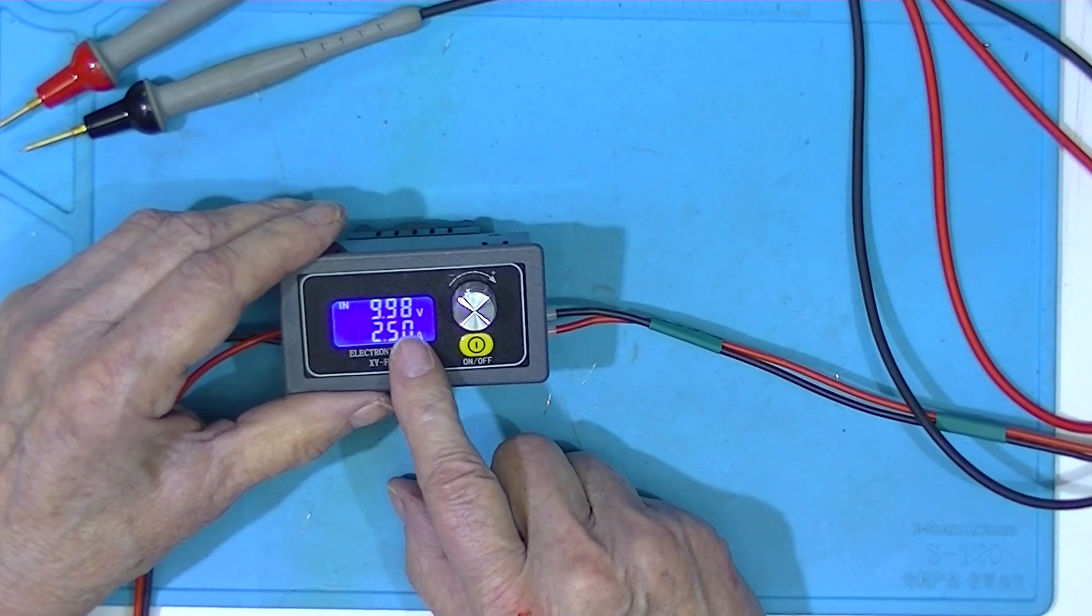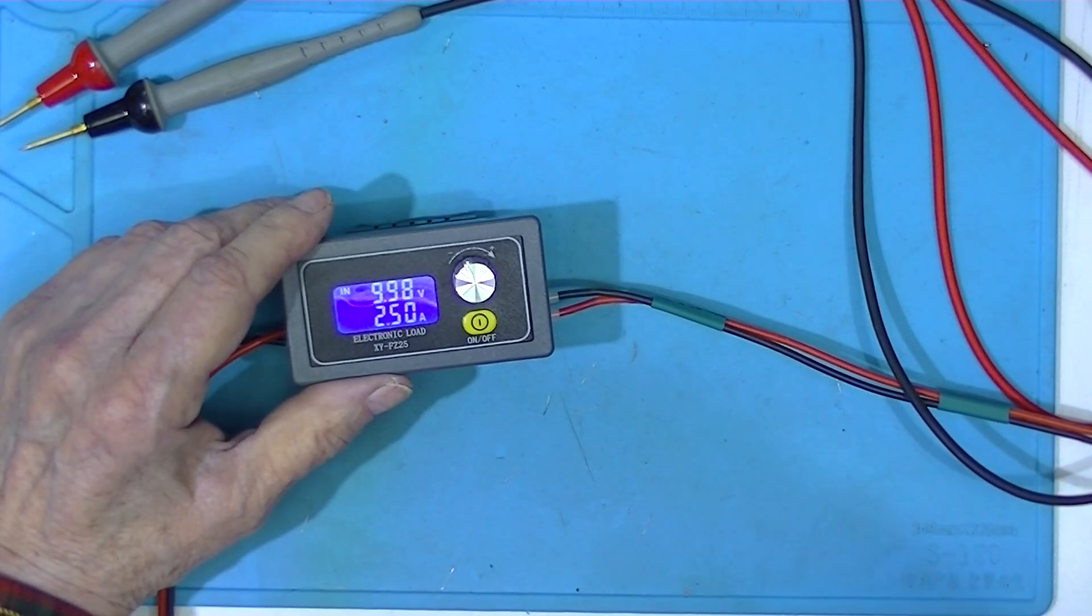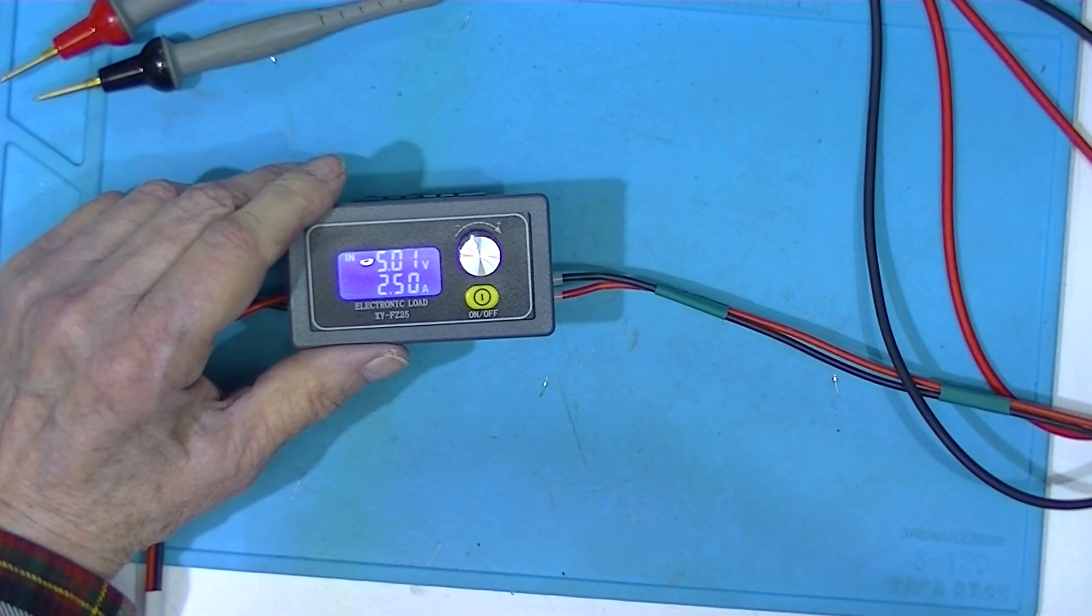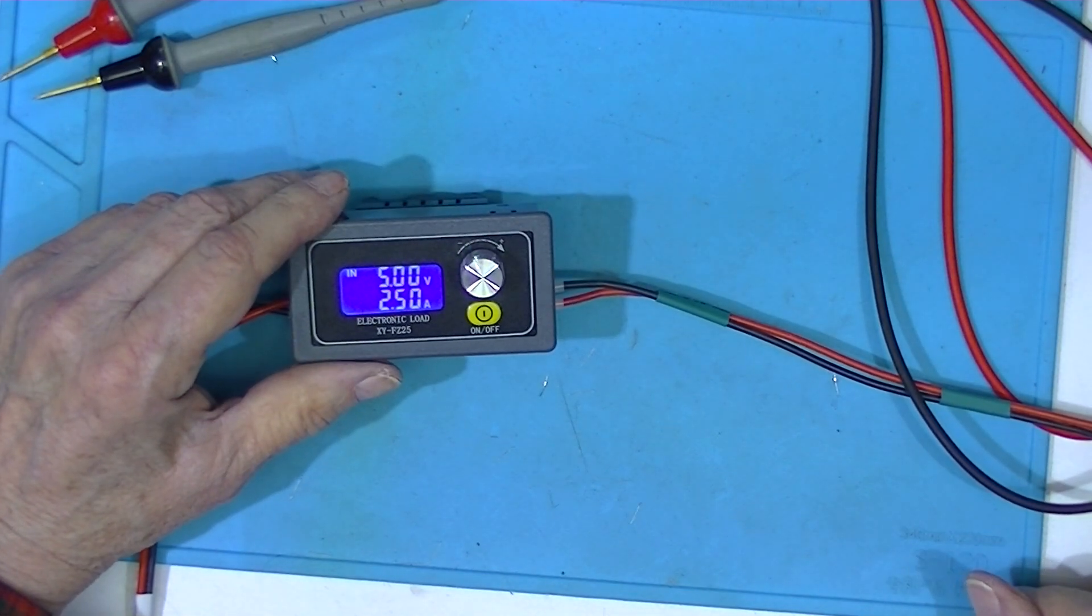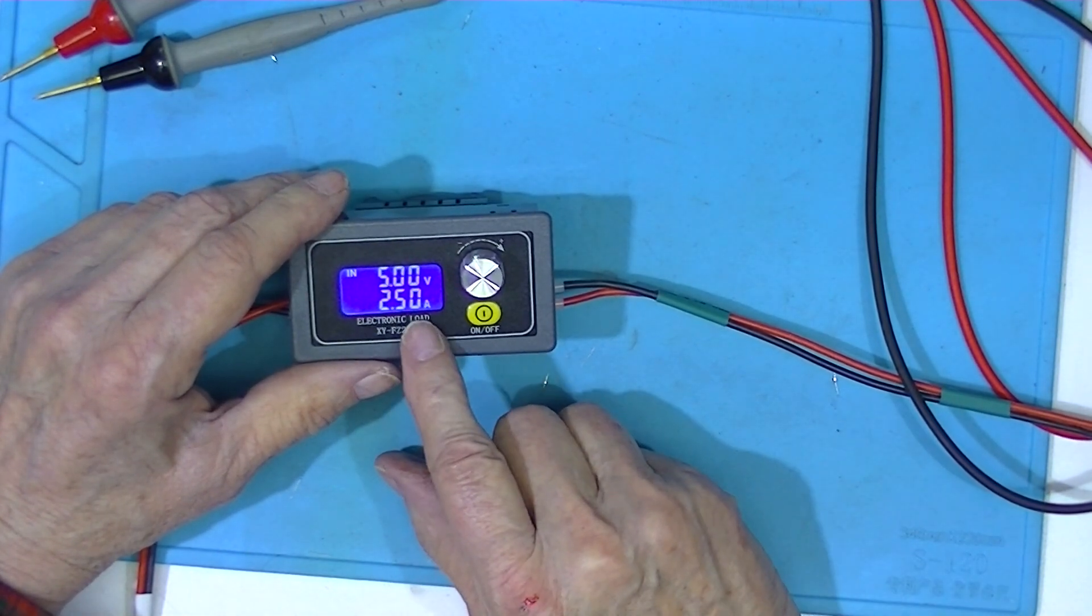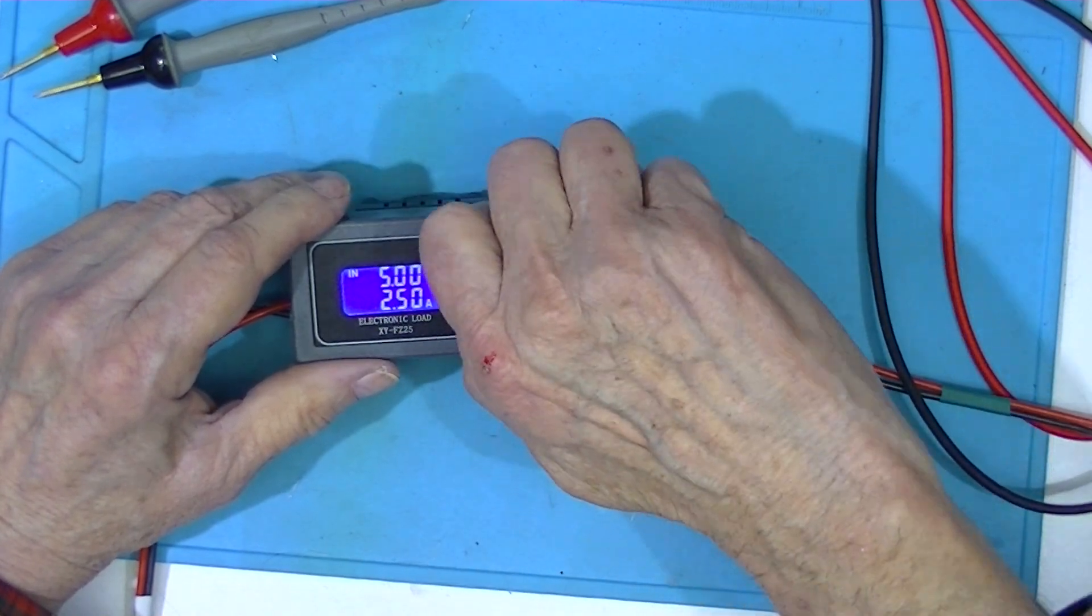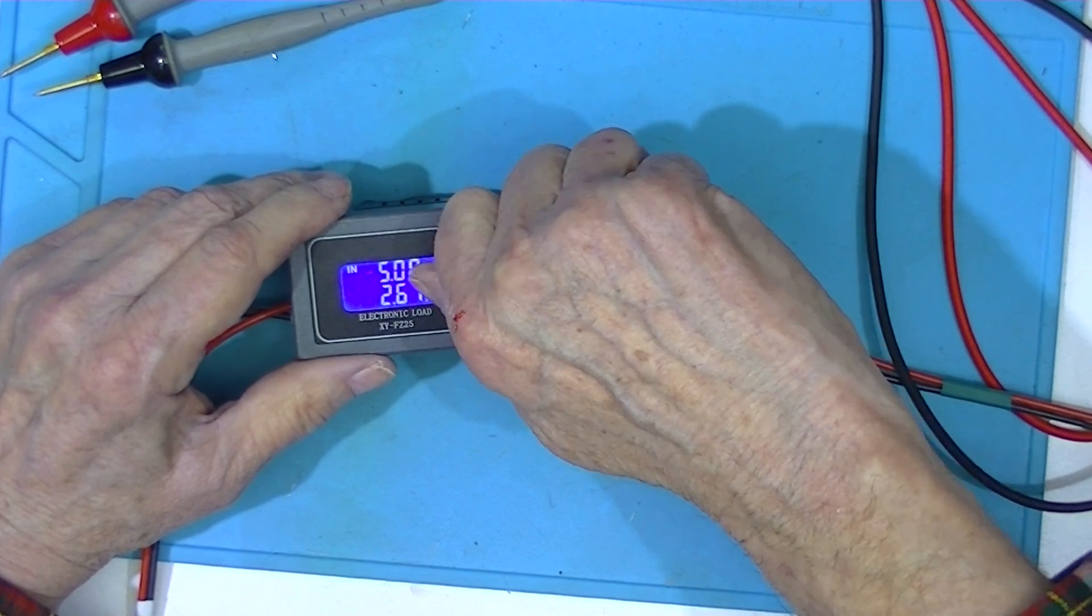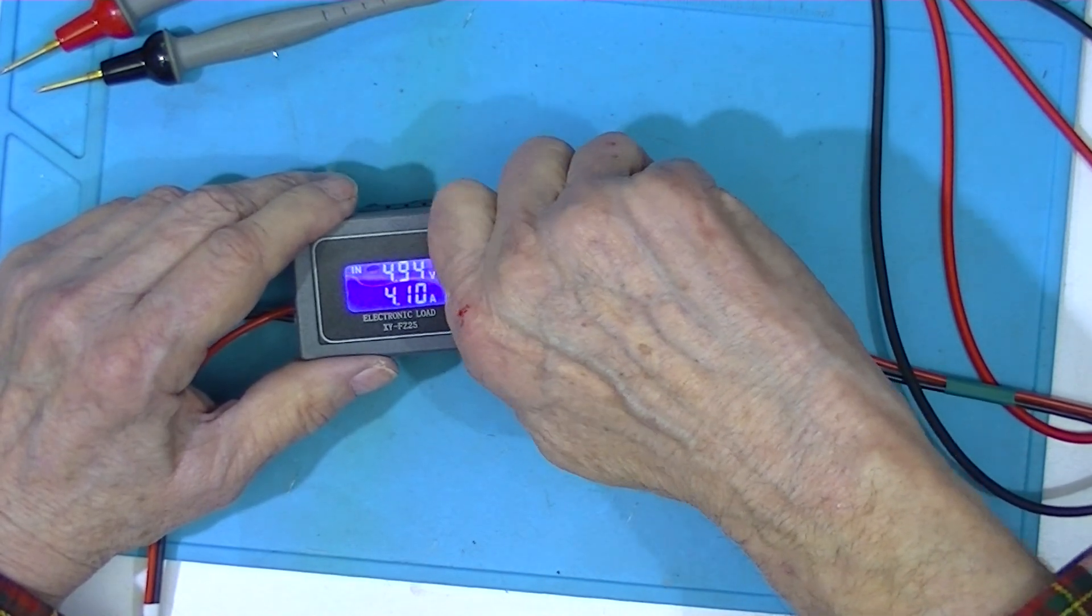I'll now turn down the voltage to 5 volts. Now I should be able to turn the current up to 5 amps. That would be 25 watts. It doesn't seem to have an acceleration control on it.